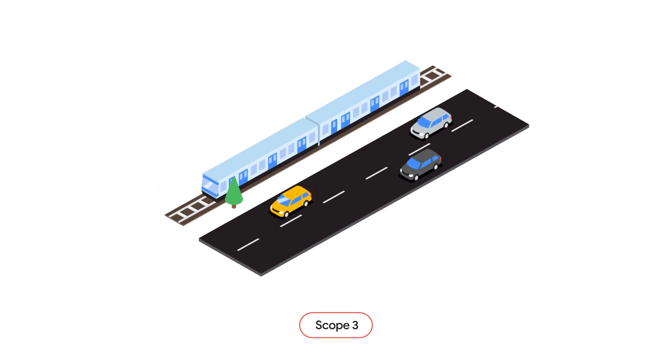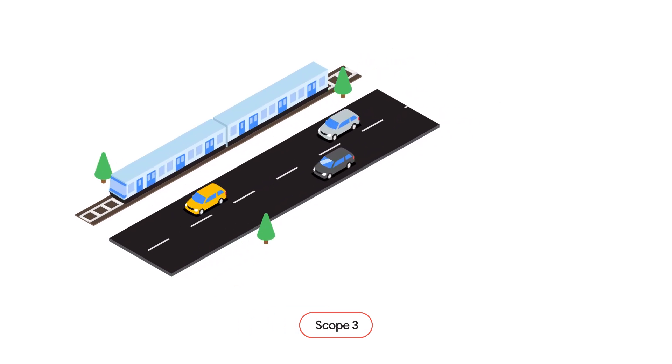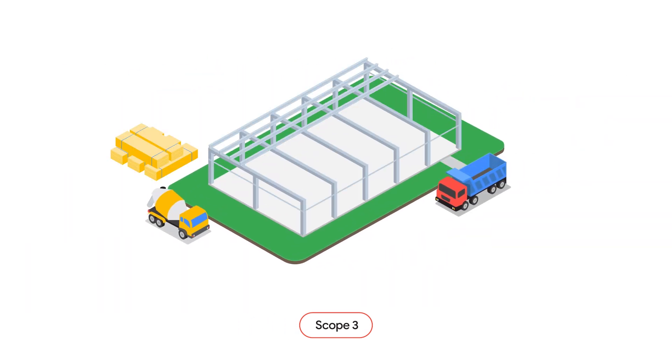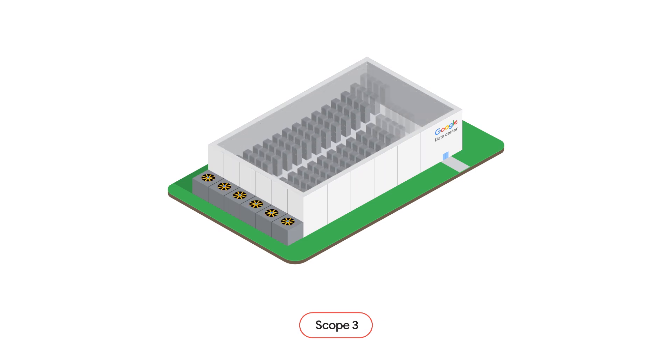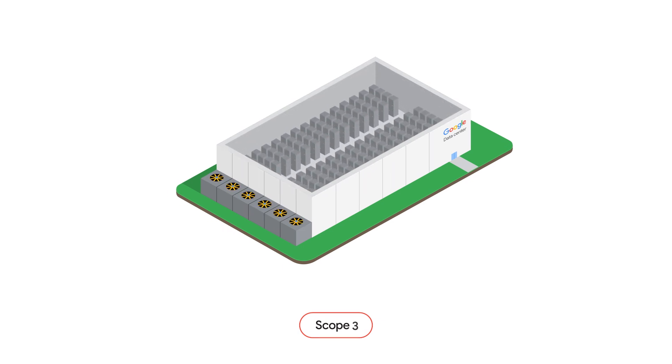Scope three: indirect emissions from employee travel, building our data centers, and filling them with servers. These emissions are the direct emissions of our suppliers.